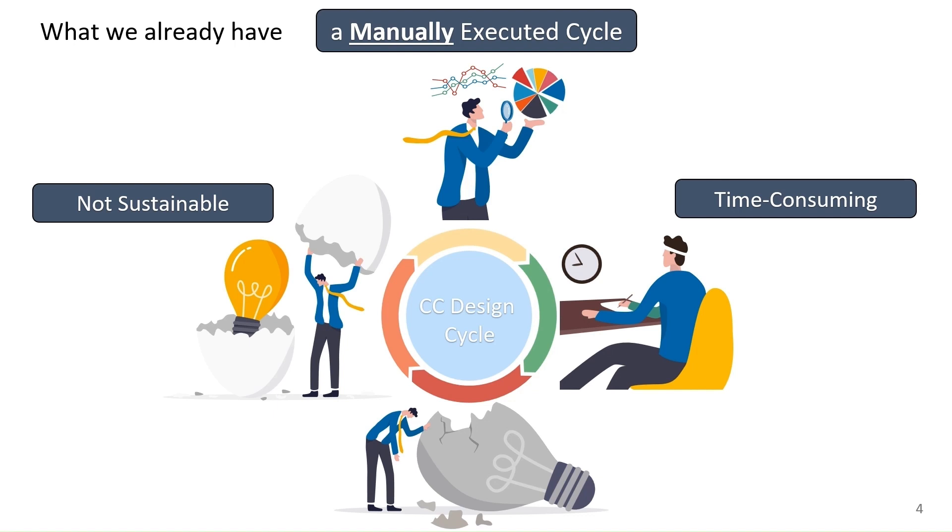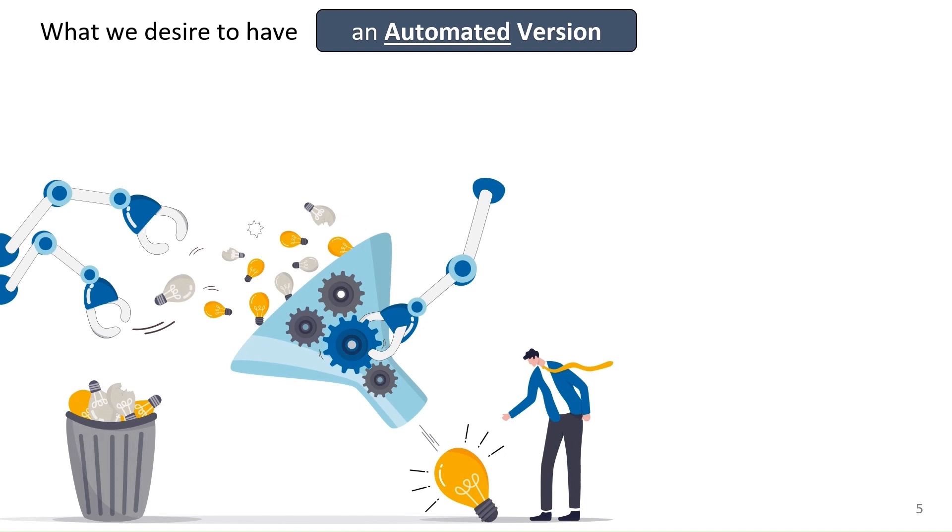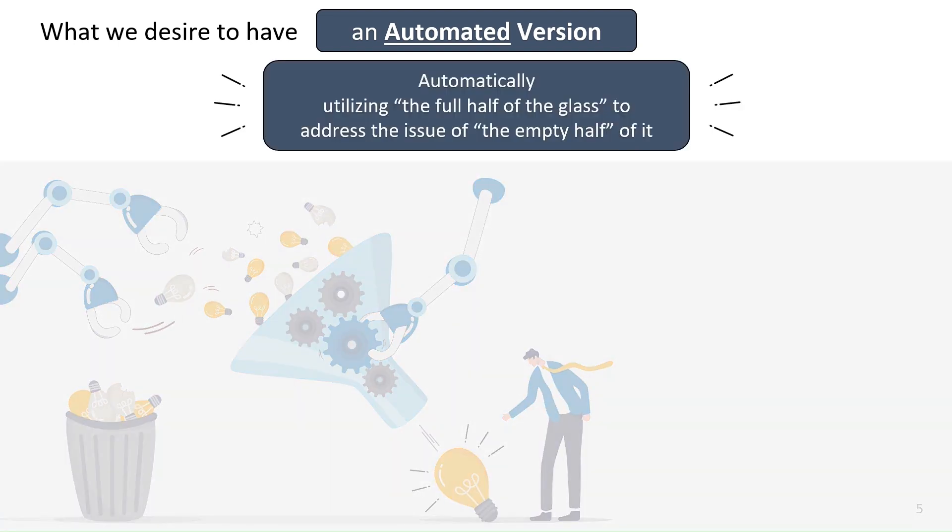So this is what we already have. But what we desire to have is a more automated version of this. If I want to show you this in a cartoonish way, this would be something like this. We want to utilize the existing schemes, whether they're broken or not, doesn't matter. We're going to utilize them and automatically come up with a better policy, with a better strategy. In other words, we're trying to automatically utilize the full half of the glass, the fact that we have lots of different congestion control schemes out there, to address the issues of the empty half of the glass, which is the problem with them in different scenarios.